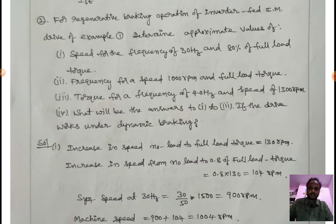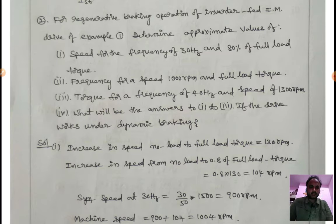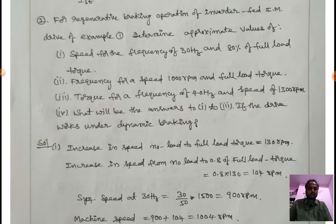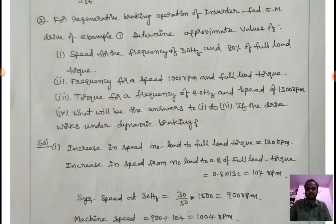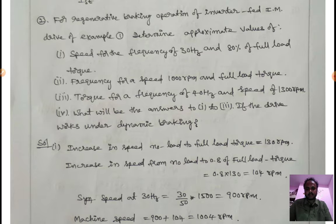From example one, determine approximate values for: first, speed at a frequency of 30 Hz and 80% of full load torque; second, frequency for a speed of 1000 rpm and full load torque; third, torque for a frequency of 40 Hz and speed of 1300 rpm; fourth, what will be the answers to parts one, two, and three if the drive works under dynamic braking.